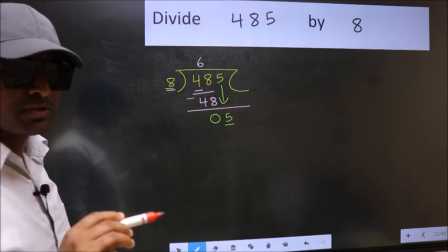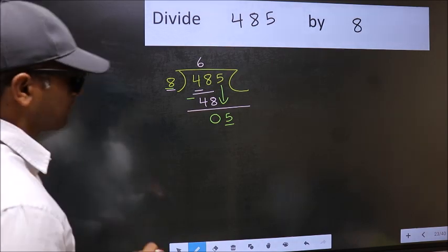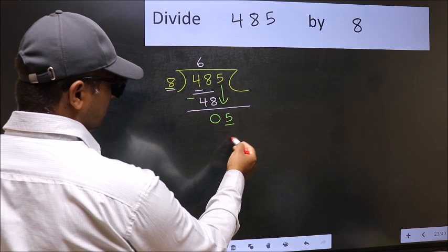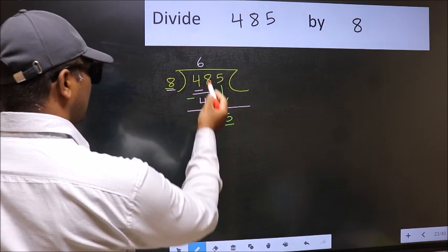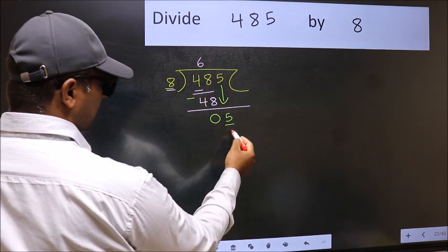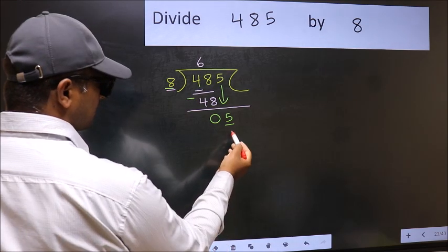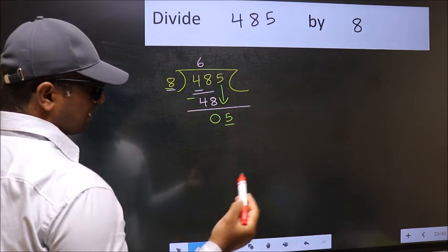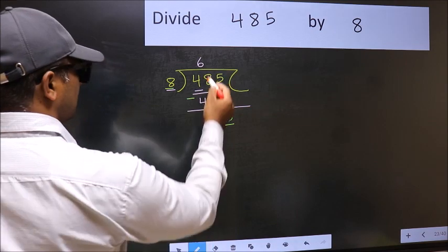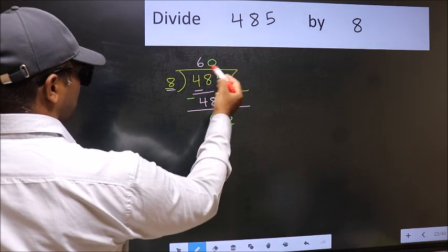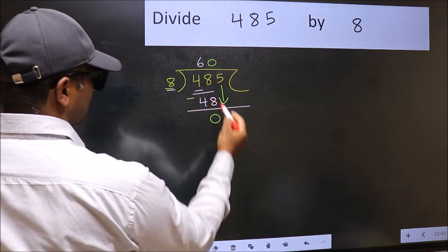Instead, what you should think of doing is, which number should we take here? If I take 1, we will get 8. But 8 is larger than 5. So what we should do is, we should take 0. So 8 into 0, 0.